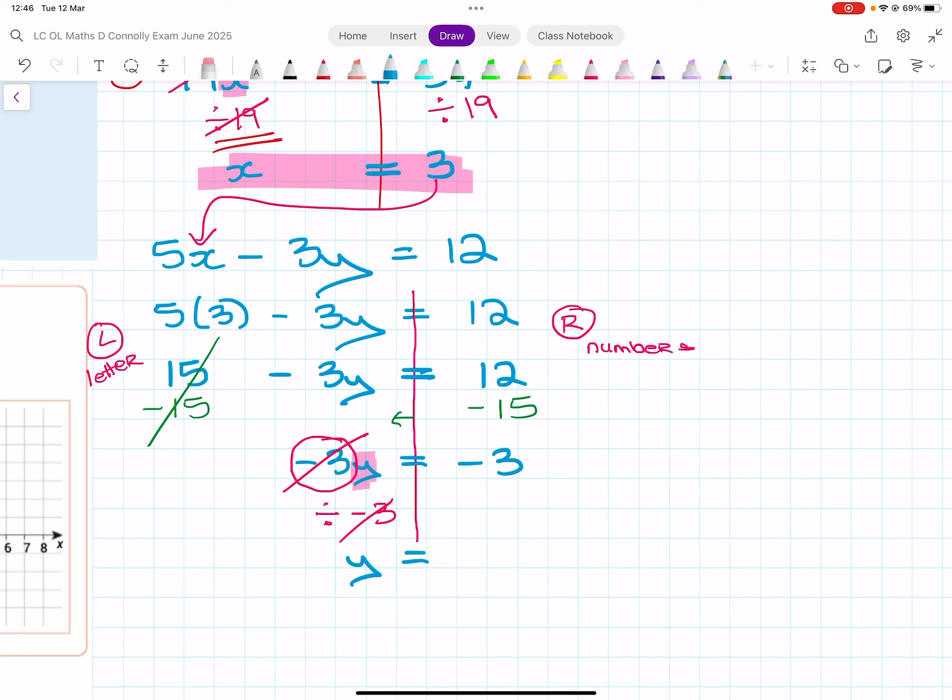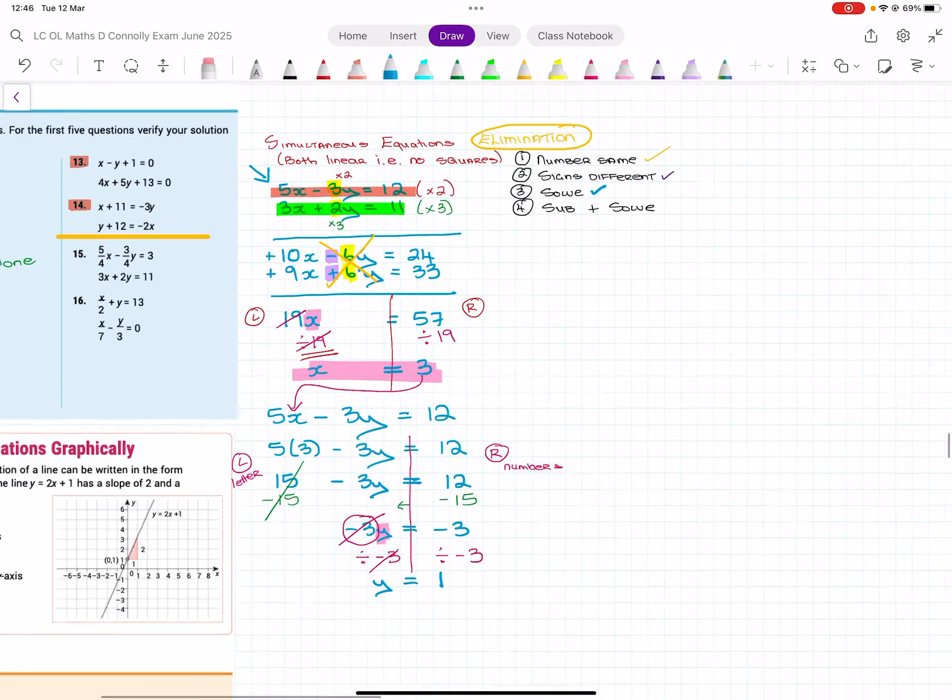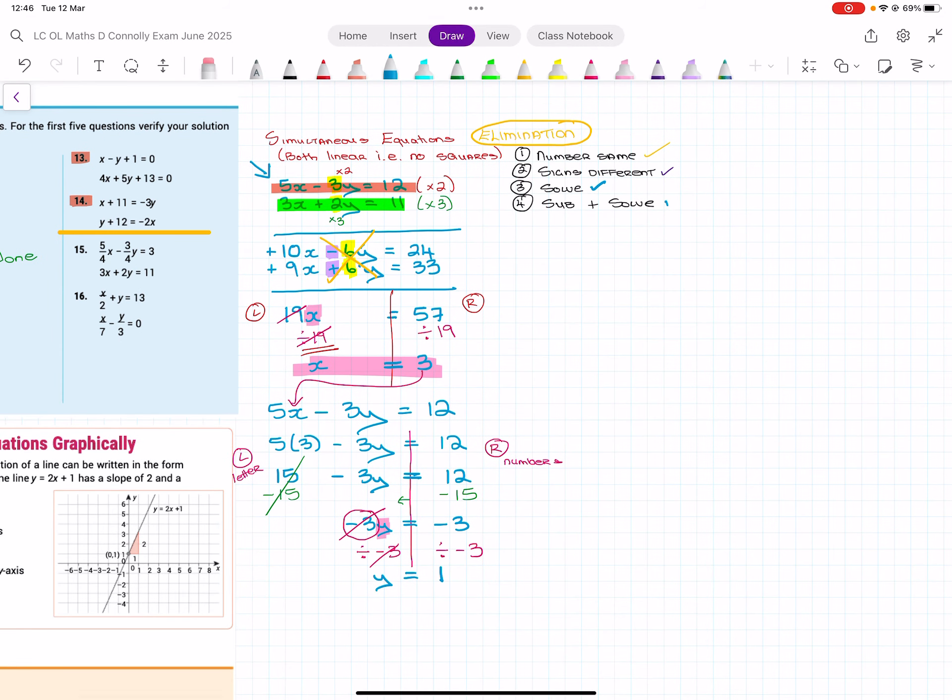But again, there is a left and a right, and if you do that on the left, you have to do that on the right. And again, if you're not sure, use your calculator. Minus 3 divided by minus 3 is 1. And now I have subbed and solved. So that is how you do simultaneous equations using elimination when there's no squares, so both equations are linear.